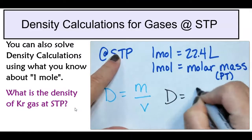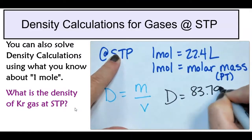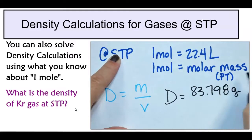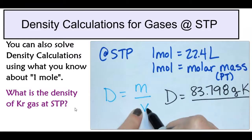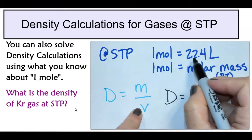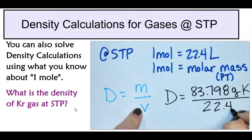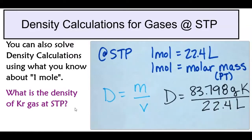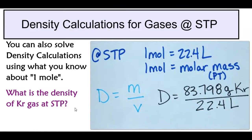So density would equal 83.798 grams of krypton divided by, and since it's at STP, I can use this volume, 22.4 liters, and then divide those values to get the density of krypton.